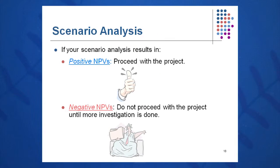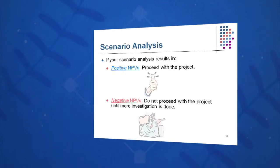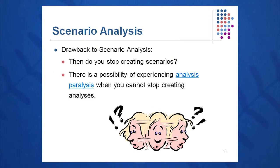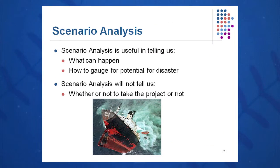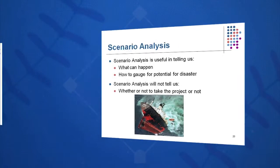If we have a positive NPV, as we said in session nine, we proceed with the project. If we have a negative NPV, we halt the project right at that point. Going back to change the numbers at that point is dangerous. And don't do too many scenarios — you can get into analysis paralysis. Scenario analysis can tell us what can happen and how to gauge potential for disaster, but it will not tell you whether or not to take the project. That is a decision you have to make for yourself.